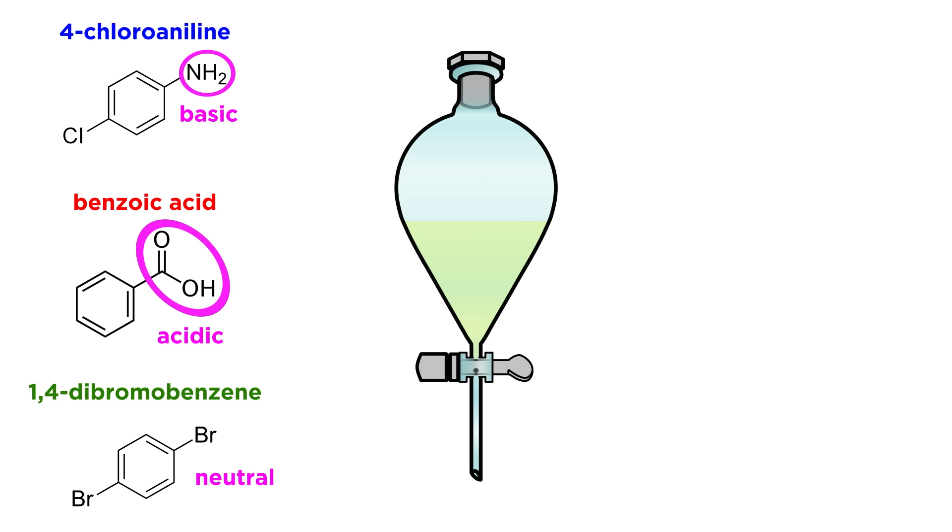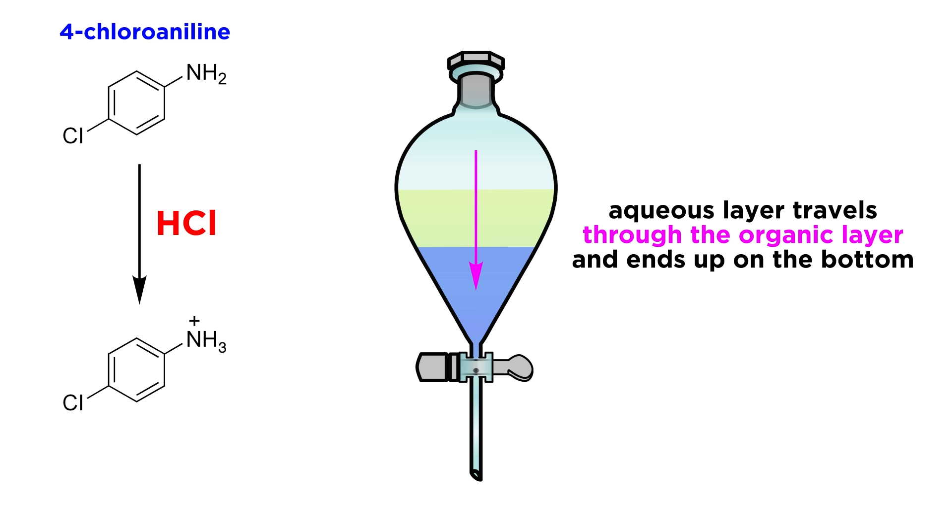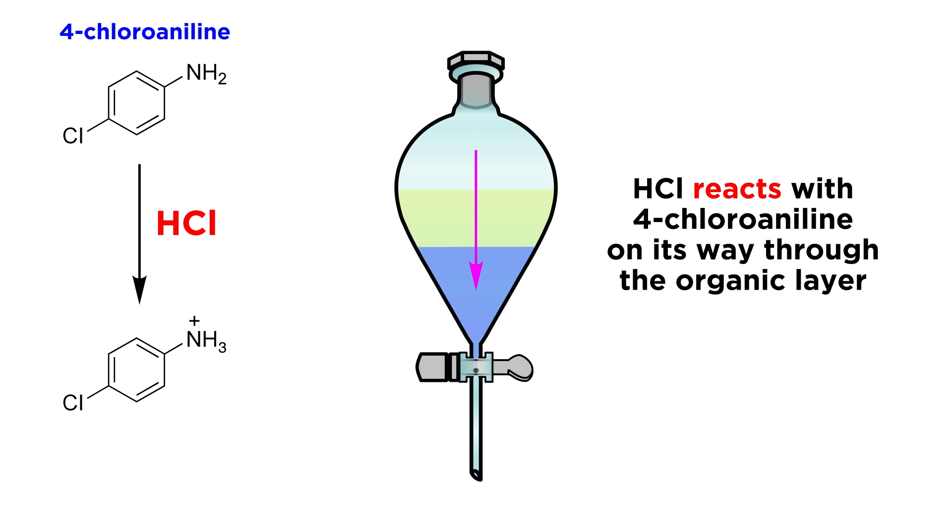Starting with the aniline, this will react with a strong acid, like hydrochloric acid, while neither of the other two compounds will react, since they are not at all basic. So let's toss in some of an aqueous HCl solution. Since this is aqueous, it will be more dense than the ether, and it will pass right through to collect on the bottom, forming an aqueous layer. But as it passes through, it will perform acid-base reactions, transferring protons to all the aniline molecules.